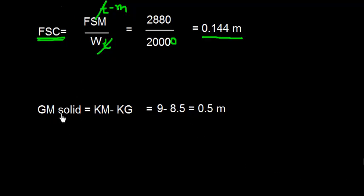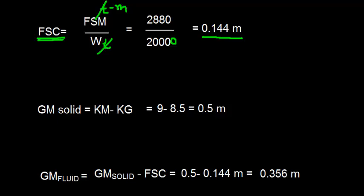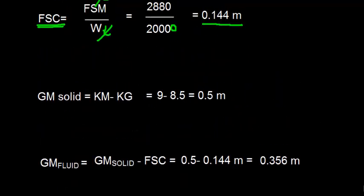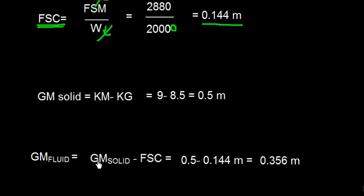This is the metacentric height GM without considering the effect of free surface. However, we have found the Free Surface Correction, which is 0.144 meters. So GM fluid is GM solid minus FSC. GM solid is 0.5 meters, and I subtract 0.144 meters, so I get this value which is 0.356 meters. This is the value of GM fluid - that is what we wanted.